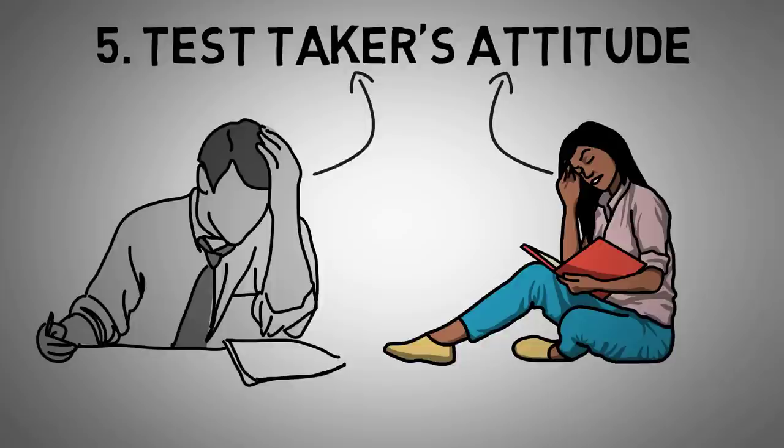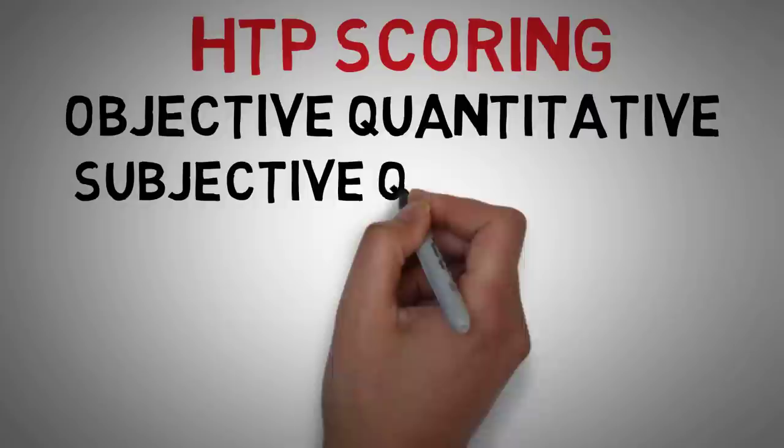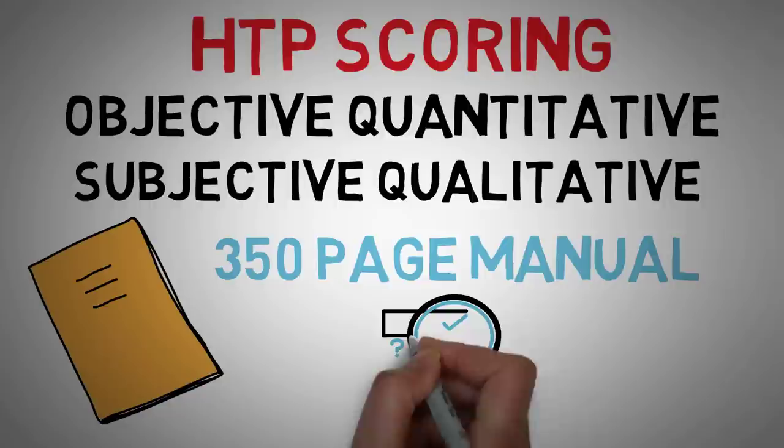Even though this is a test, you may be wondering how it is scored. A House Tree Person Test can be scored either in an objective, quantitative, or subjective, qualitative manner. Trained therapists rely on John Buck's comprehensive 350-page manual and interpretive guide in administering and scoring the House Tree Person Test.